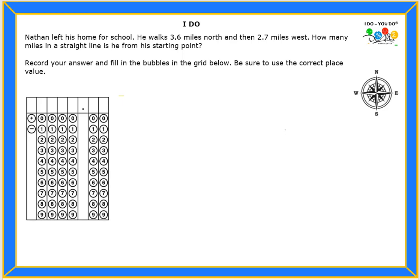Hello students. Let's read the problem. Nathan left his home for school. He walks 3.6 miles north and then 2.7 miles west. How many miles in a straight line is he from his starting point?